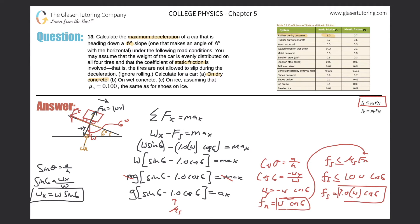So let's calculate. We have g = 9.8, times (sine of six minus 1 times cosine of six). And what do we get? We get negative 8.7. So a sub x for letter A equals negative 8.72 meters per second squared. That should make sense — it is a deceleration; it is negative, so it's pointing backwards.